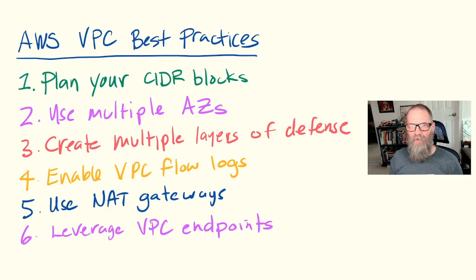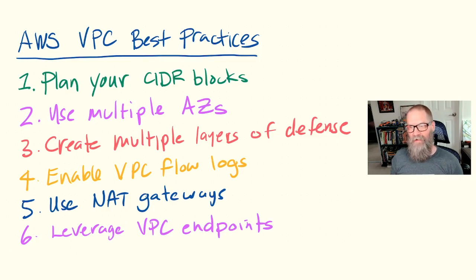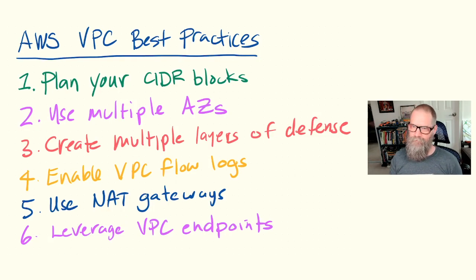Point number three: create multiple layers of defense. The first two things to think about with multiple layers of defense in your networks are network access control lists. These are stateless firewalls that operate at the subnet level and they are optional. Then we have security groups, which are stateful firewalls that operate at the elastic network interface level inside your VPC. Security groups are required. Those are two simple ways to create multiple layers of defense within your environment.